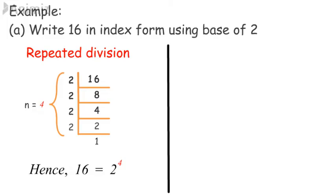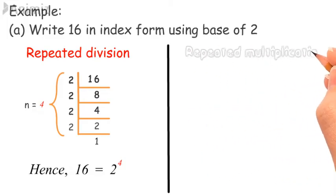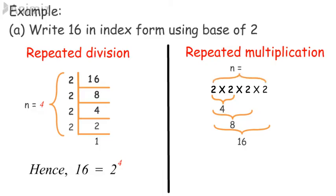Using the repeated multiplication method: 2 × 2 = 4, 4 × 2 = 8, 8 × 2 = 16. Hence, 16 = 2 to the power of 4.